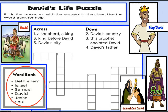Let's begin with the first clue for one across: a shepherd, a king. Who was that? That was David. He went from being a shepherd to a king. Now, since we have the I, let's go to two down.